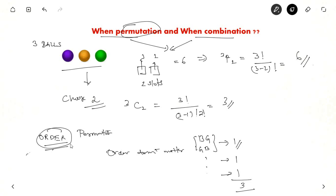So this is the key to solve which is permutation and which is combination.